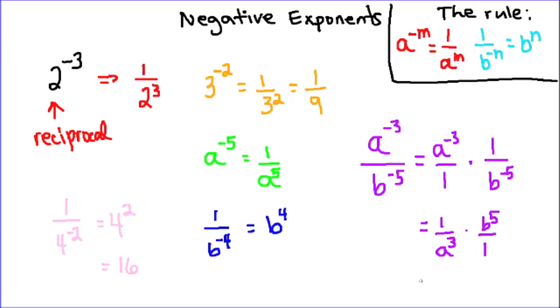And so now let's put those back together. 1 times b to the power of 5 is b to the power of 5 over a to the power of 3 times 1 is a to the power of 3.